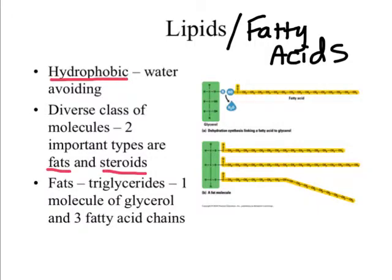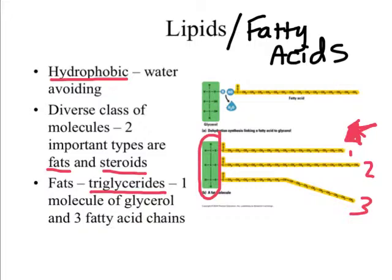Fats are also called triglycerides. As shown in this example, 'tri' means there are three fatty acids — long chains of lipid molecules — attached to what's called a glycerol group. A glycerol group is a three-carbon sugar, and these three fatty acids are connected to each of the three carbons in the glycerol via dehydration synthesis. This is, in essence, what we call a fat molecule.